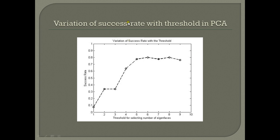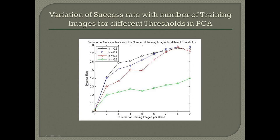This graph shows the variation of success rate with the threshold. Threshold here refers to the number of eigenvectors considered for facial recognition — that is, for comparison of the unknown image with the training set. It can be seen that as the number of features is increased, the success rate also increases. This next graph shows the variation of success rate with the number of images and different thresholds. As the number of images increases, performance increases, and as the threshold increases, performance also increases.